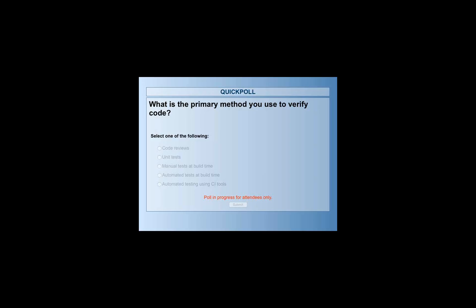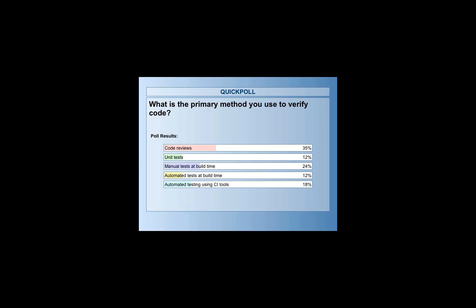We have a poll: what is the primary method you use to verify code? Are you doing manual code reviews, writing unit tests, creating or running manual tests at build time, automating tests whenever you build, or automating all testing with continuous integration tools so it happens every time developers check in code? We'll let this run for about 30 seconds to give people a chance to respond — the results are coming in pretty quickly.